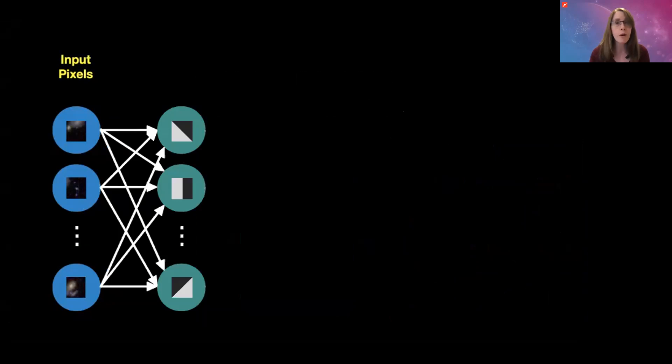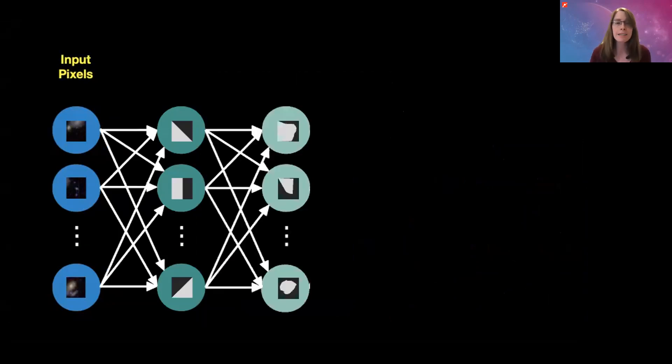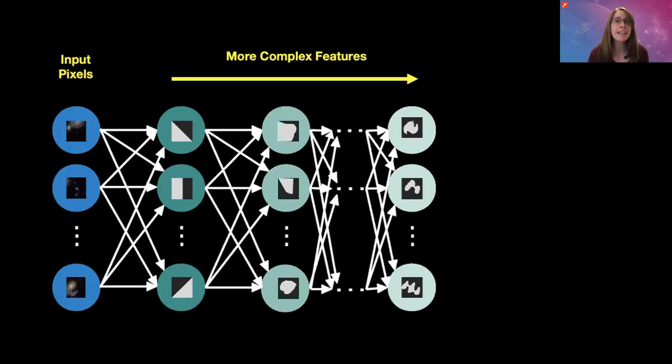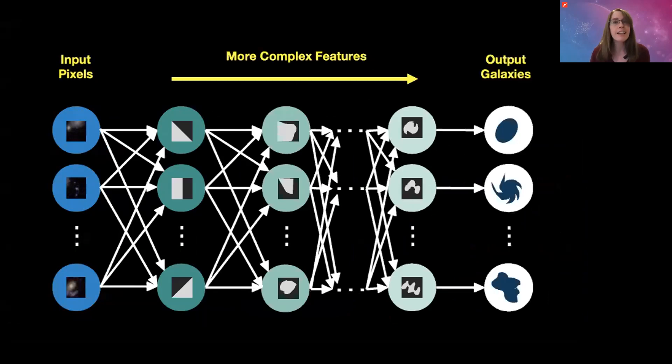It'll round up all of that information about where the edges are and pass it to another layer of processing to look for very slightly more complicated features. And then it'll round up that information and pass it on again through many layers of processing, building up more and more complicated features as it goes along, until in the last layer, it can spit out its best guess at where different types of galaxies are present in the original image.